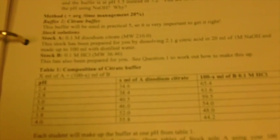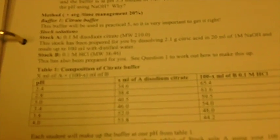For the first part of the practical, you're required to make a citrate buffer. This citrate buffer is made up from two solutions: stock A, which is a 0.1 molar disodium citrate buffer, and stock B, which is 0.1 molar HCl.